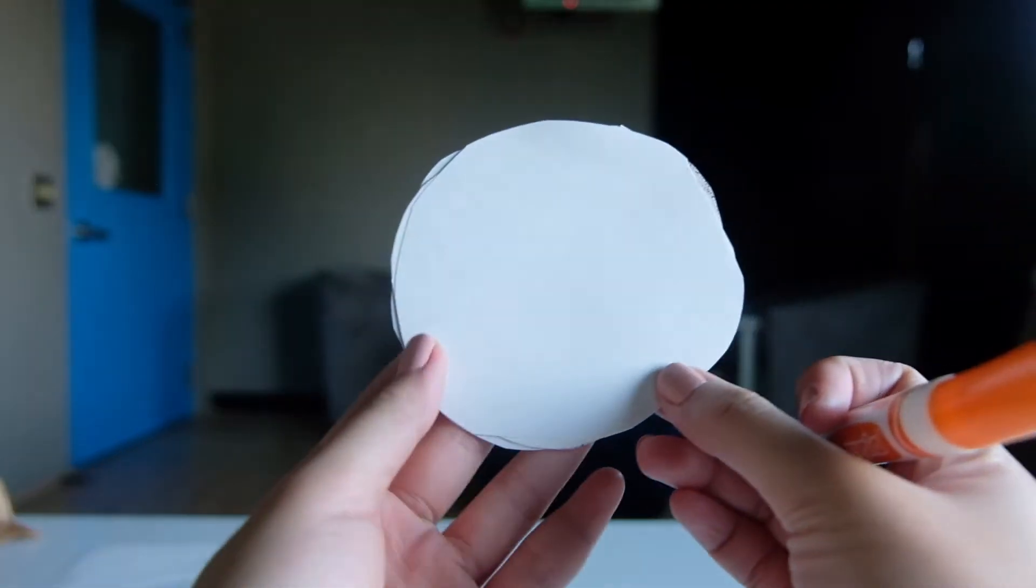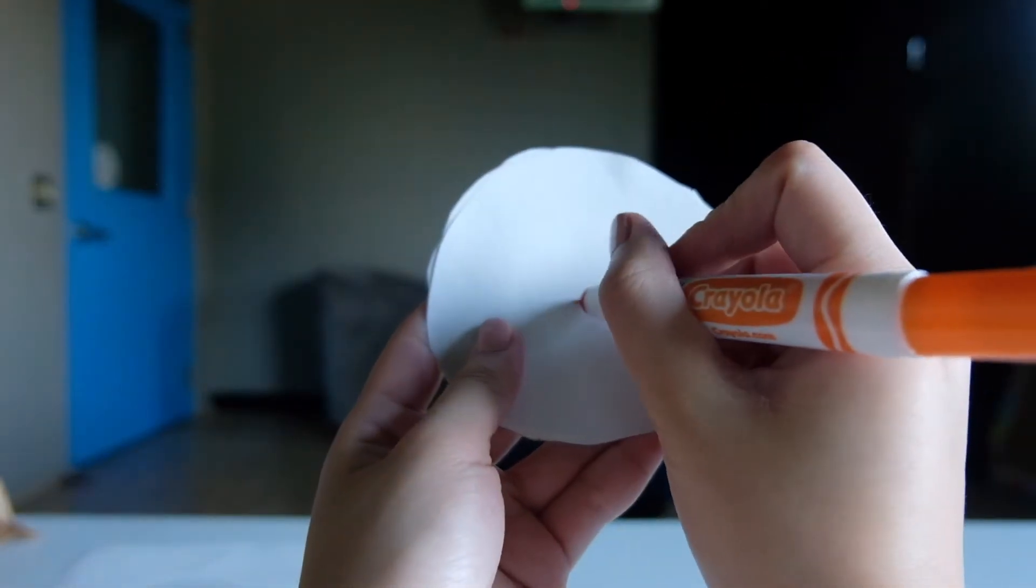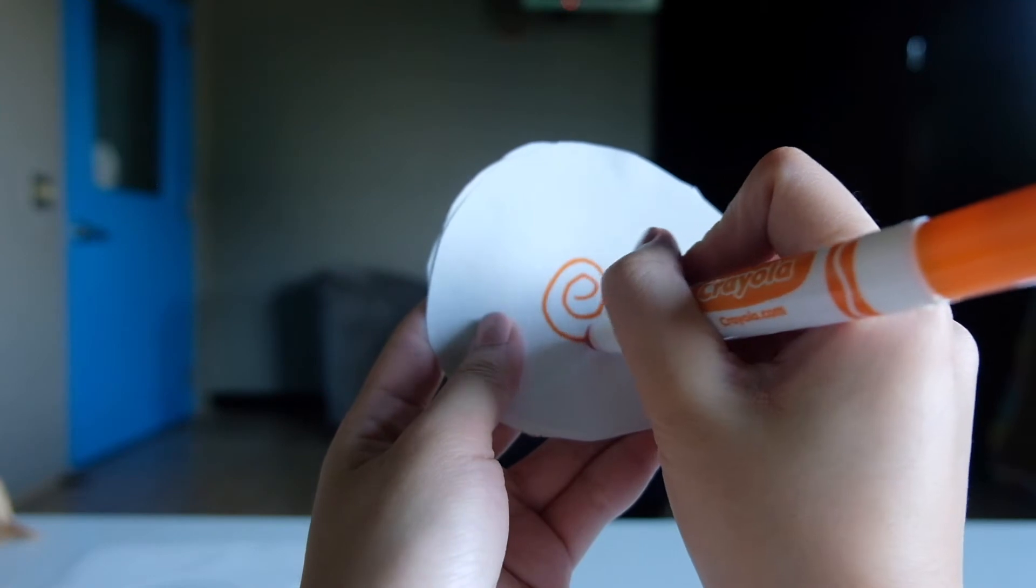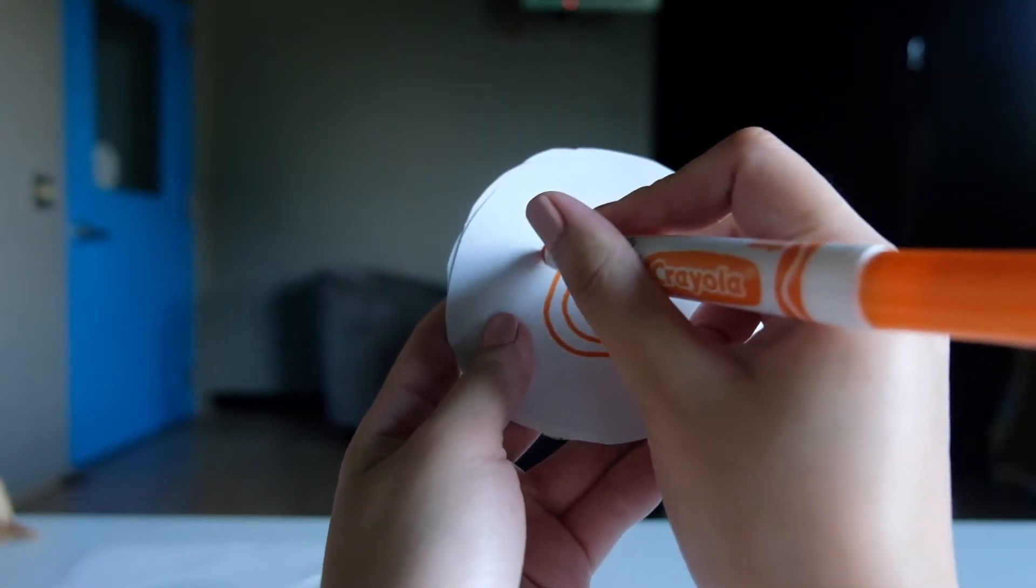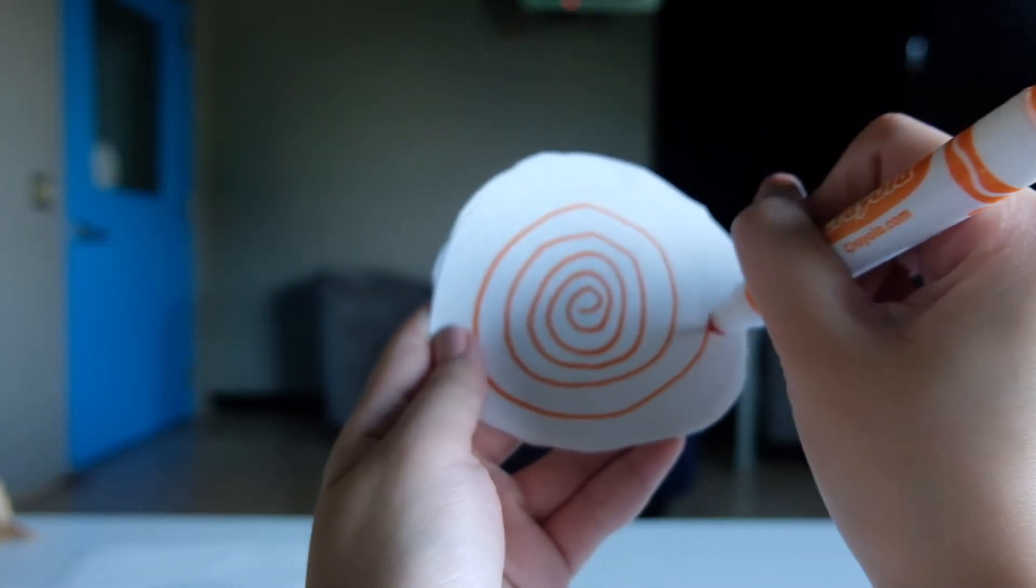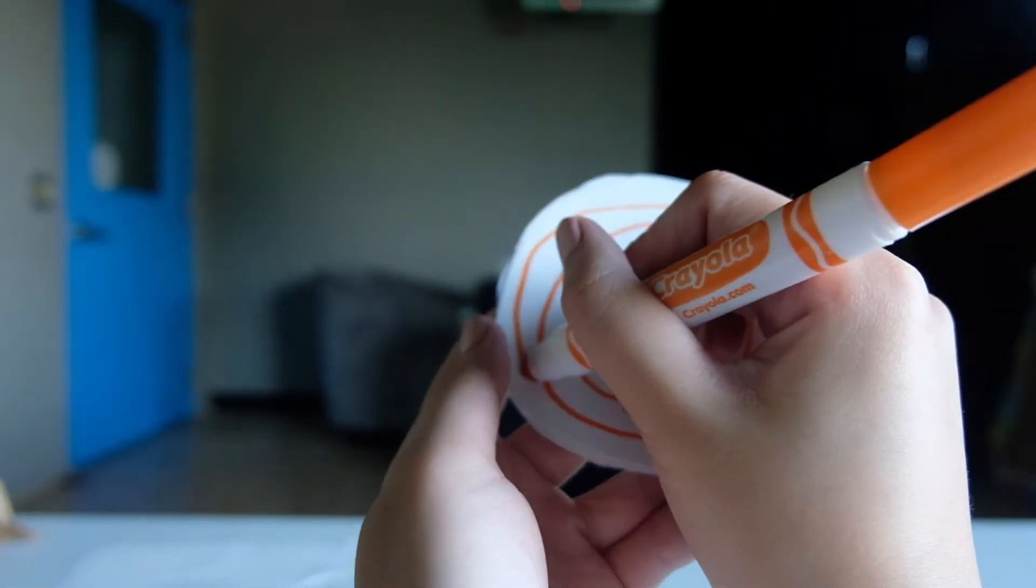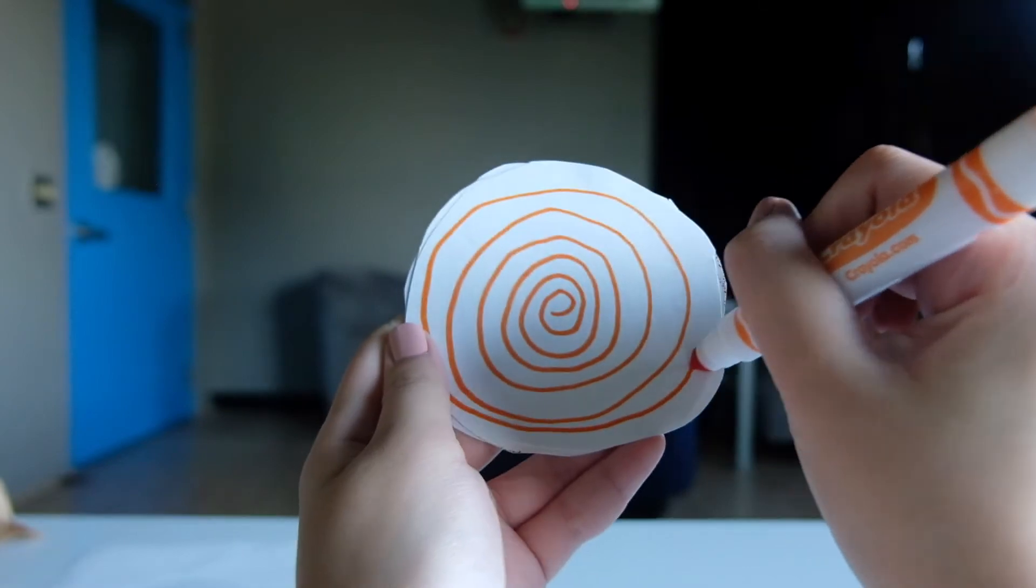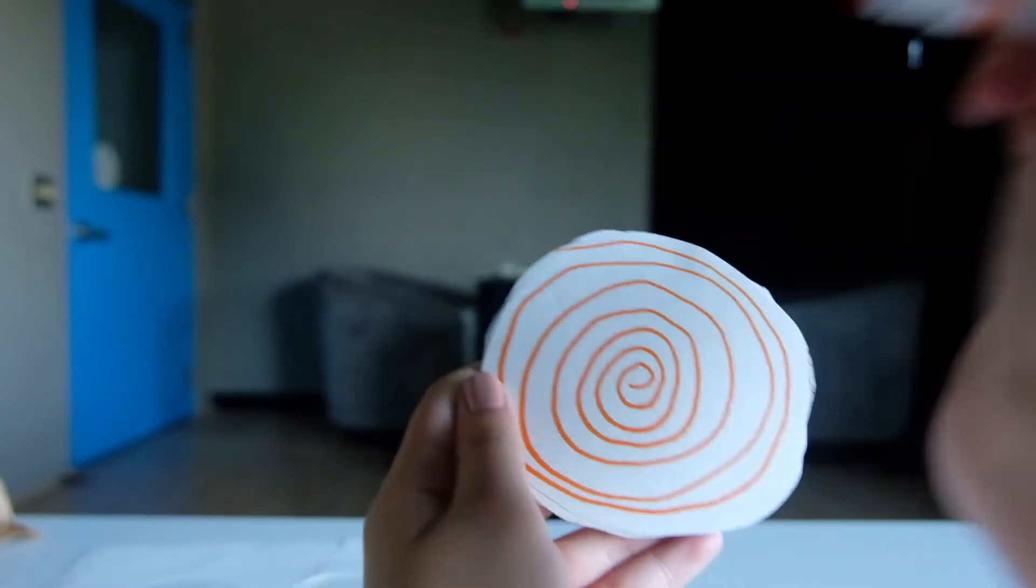Now that we are done gluing, we are going to decorate our spinner now. So grab any color marker you want and draw any design that you want on the circle. Here, I'm drawing a spiral shape all around the circle. So make sure your design takes up the entire space.